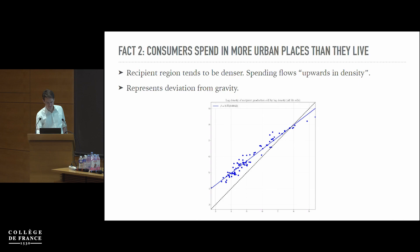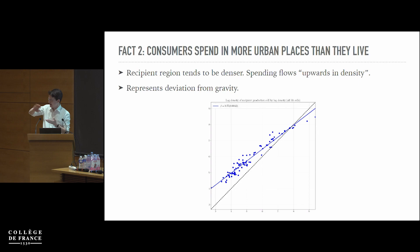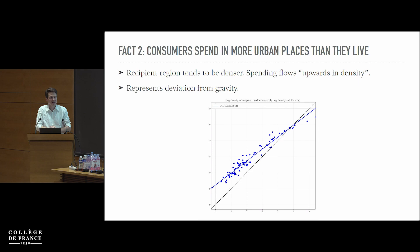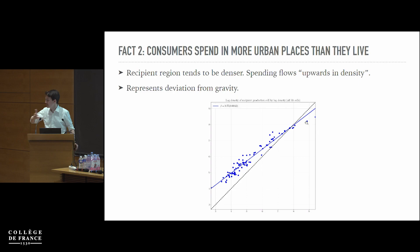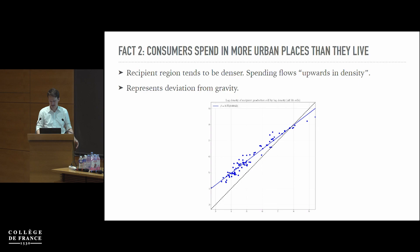Fact two: consumers tend to spend in more urban places than where they live. On the x-axis is log density of the consumer's residence; on the y-axis is the average log density of where that consumer's spending goes. There's a strongly increasing relationship, positioned above the 45-degree line — meaning if you live in a less dense area you tend to spend on denser areas, going into cities or larger towns nearby. People are much more willing to drive longer to go into cities and spend there.